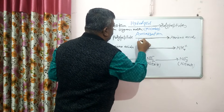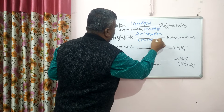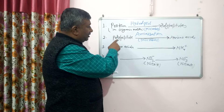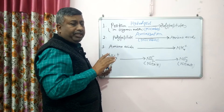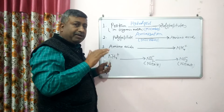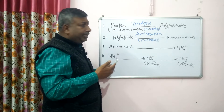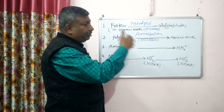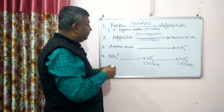Bacteria and fungi are involved in conversion of polypeptide into amino acids. In the first process, protein breaks down into polypeptides in soil, carried out by microbes, and water is essential. Then polypeptides break into amino acids — there are 20 types. These amino acids are released into the soil, and this process is called ammonization.